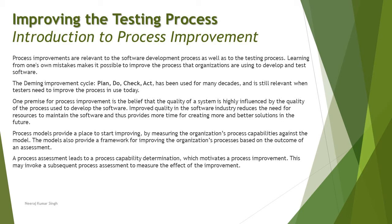The very first thing we're talking about is the Deming improvement cycle, which stands for PDCA — Plan, Do, Check, Act. You first plan for something, then you work on it, then you check what you were supposed to do versus what you have done, and then act upon it so you can actually get what you intended. PDCA has been used for many decades and it is still relevant when a tester needs to improve the process in use today.